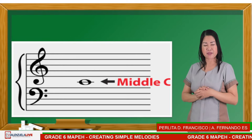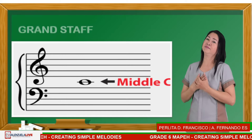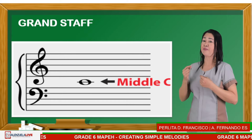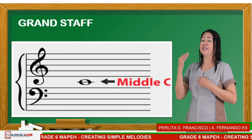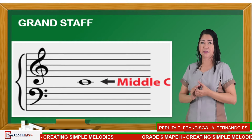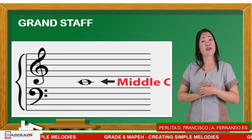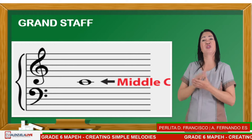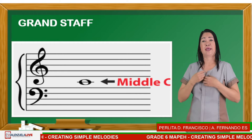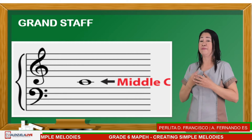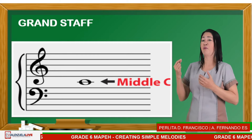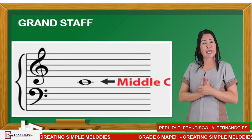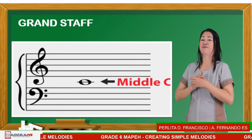If we put these two staves together, we now have the grand staff. Always remember: the G-clef is drawn above the middle C and the bass staff is drawn below the middle C. The G-clef is used for higher voices like soprano and tenor, and for instruments like flute and violin. The bass clef or F-clef is used for low pitch voices like bass and baritone.